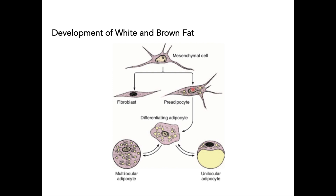When mesenchymal cells develop into pre-adipocytes, they already have numerous lipid droplets in the cytoplasm. They then differentiate further into differentiating adipocytes, which acquire a somewhat globular shape. Depending on the needs of the body, this can become either a multilocular adipocyte or a unilocular adipocyte — the unilocular being white, the multilocular being brown adipose tissue.